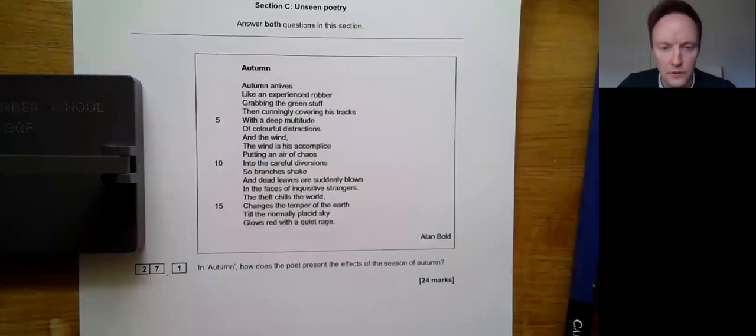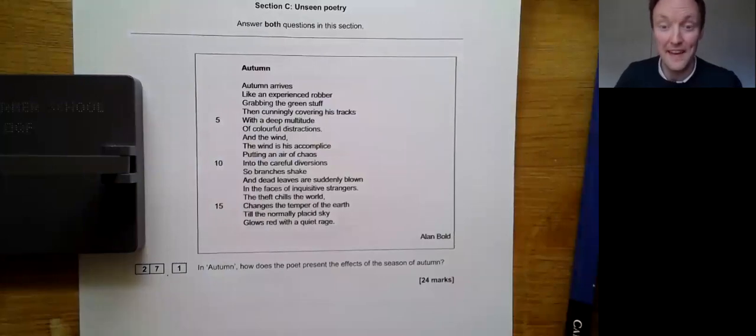And this is the June 2017 paper focusing on the poems Autumn and Today. First thing that you should do, read the question, read the poem. Question: in autumn how does the poet present the effects of the season of autumn?